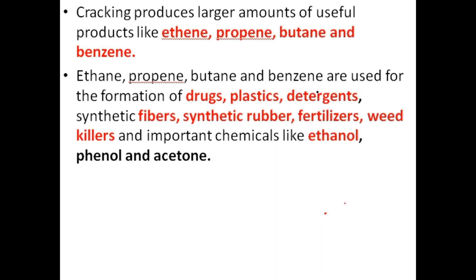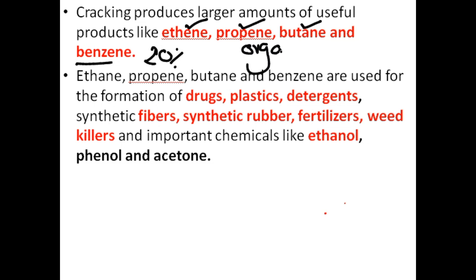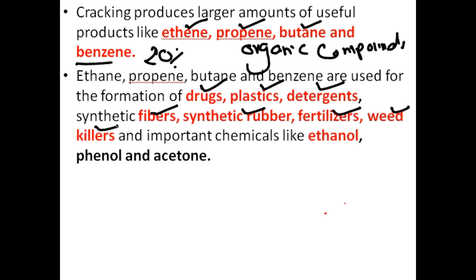Now let's talk about its examples — what cracking is carried out on, and what profits we get from it. We wanted to increase the quantity of petrol, as we were getting only 20% in the reforming process. Moreover, in cracking we get different products: we get ethane, propane, butane, and benzene. These are the most important organic hydrocarbons, and they are used in industry for the formation of drugs, plastics, detergents, fiber, synthetic rubber, fertilizers, and weed killers.